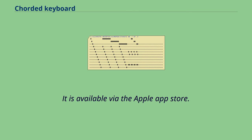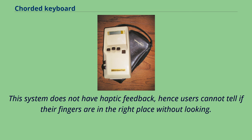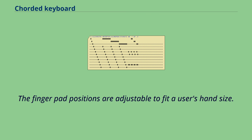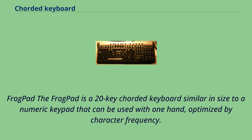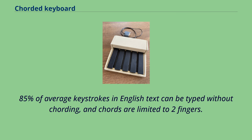The SciWriter system does not have haptic feedback, so users cannot tell if their fingers are in the right place without looking. The finger pad positions are adjustable to fit a user's hand size. It also works for left-handed users and has a live speech output facility, useful for individuals with speech impairments. The FrogPad is a 20-key corded keyboard similar in size to a numeric keypad that can be used with one hand, optimized by character frequency. 85% of average keystrokes in English text can be typed without cording, and cords are limited to two fingers.